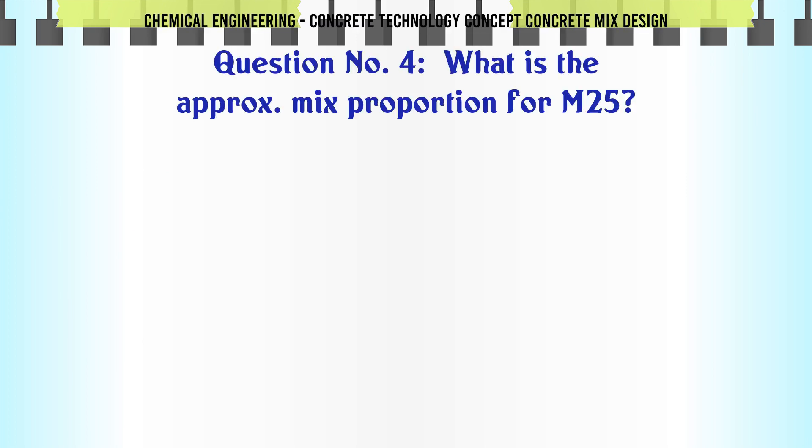What is the approximate mix proportion for M25? A: 1:3:6, B: 1:2:4, C: 1:1.5:3, D: 1:1:2. The correct answer is 1:1:2.